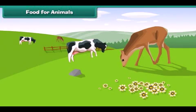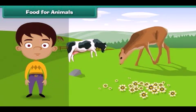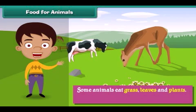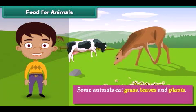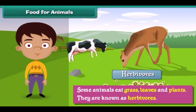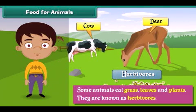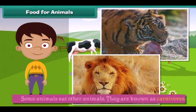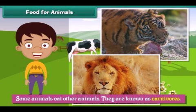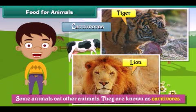Let us learn about what animals eat. Some animals eat grass, leaves and plants — they are known as herbivores. Examples of herbivores are cows, deer, etc. Some animals eat other animals — they are known as carnivores. Examples of carnivores are lions, tigers, etc.